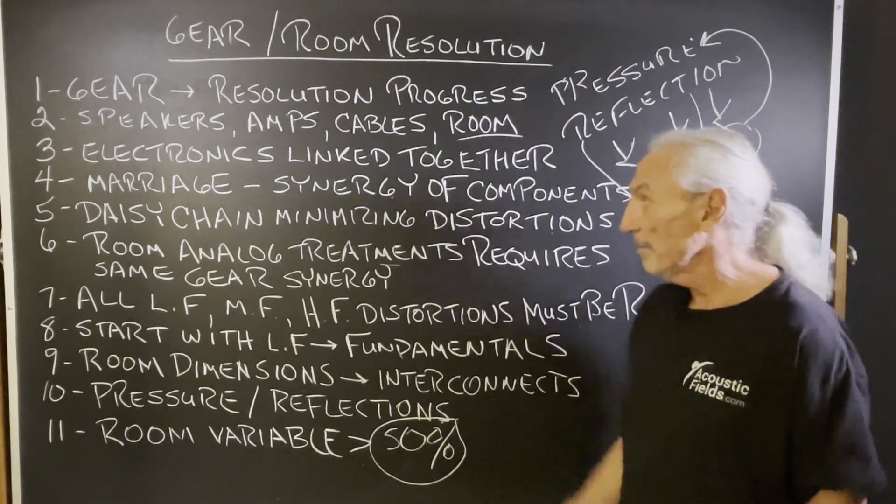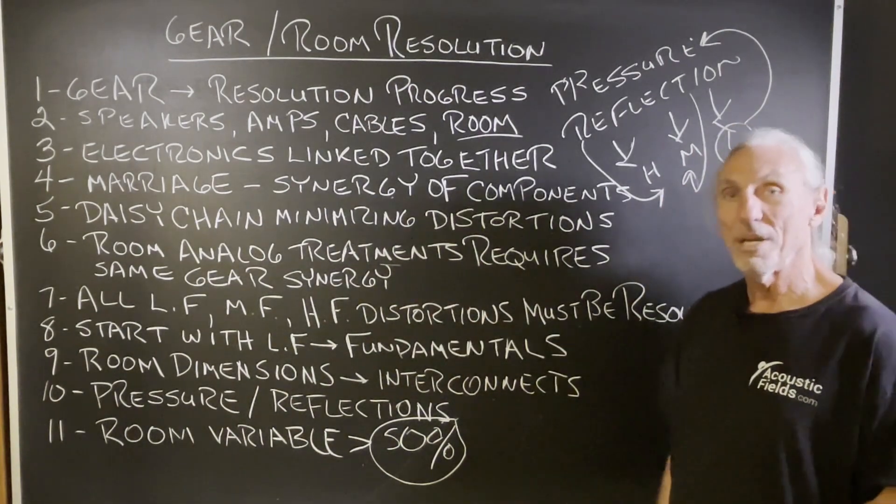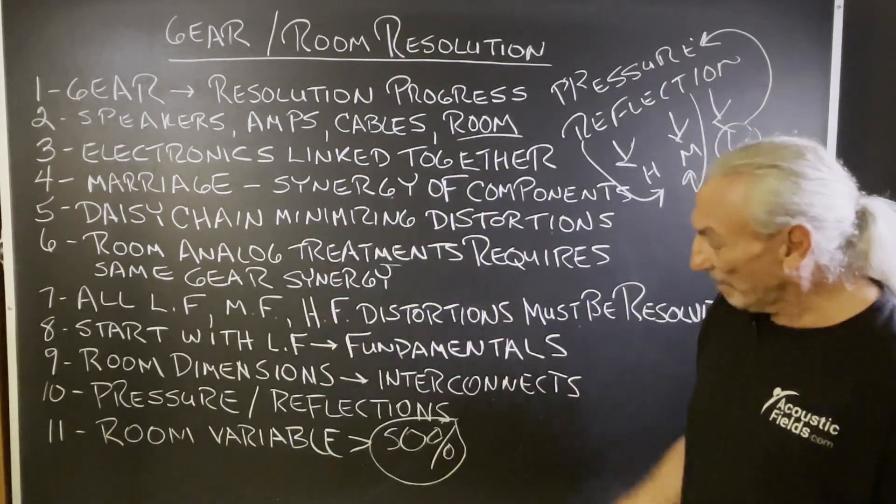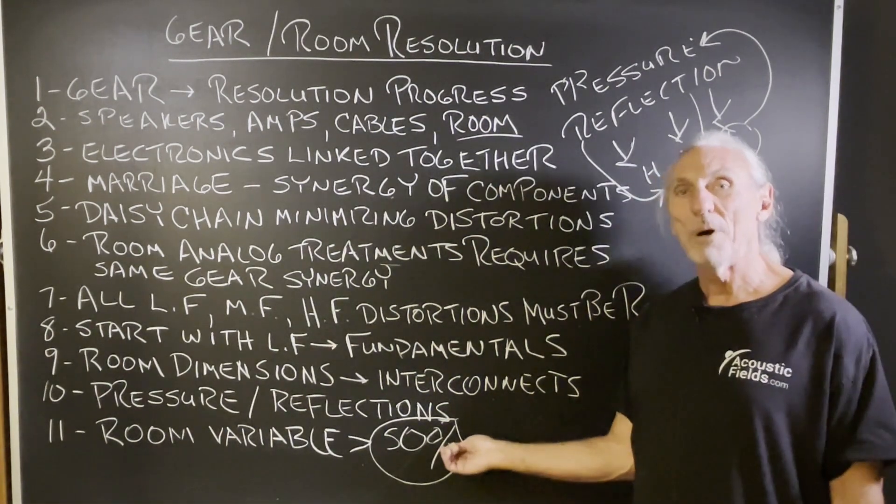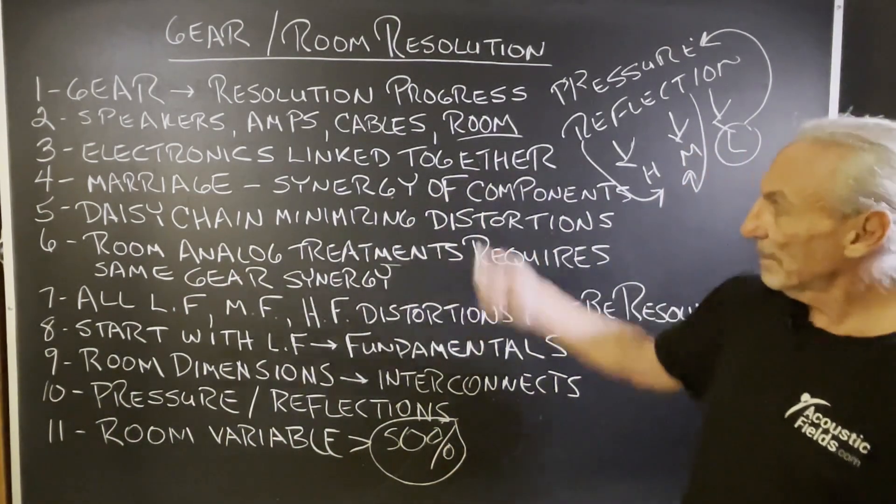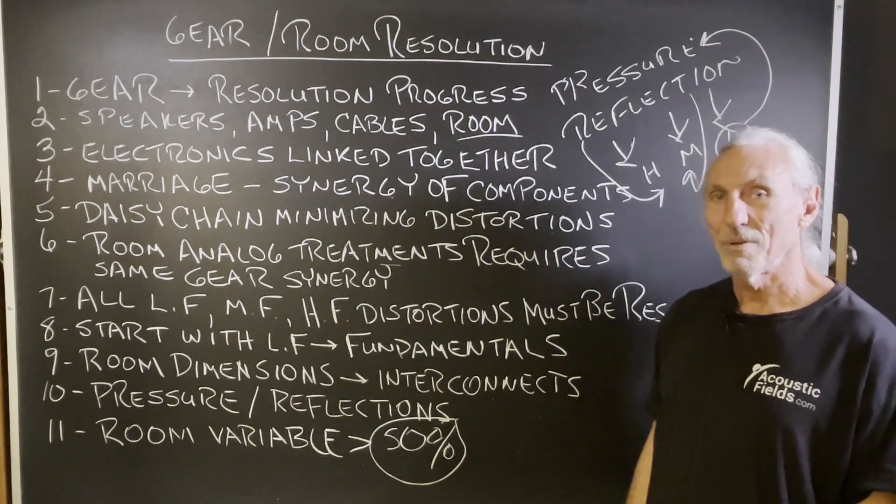The lows, the mids, and the highs. And we must treat the lows because they cause all the other issues. So that has to be our top priority. But we have to treat the components of the room in the same manner that we treat the components of our gear. It just makes sense, right?